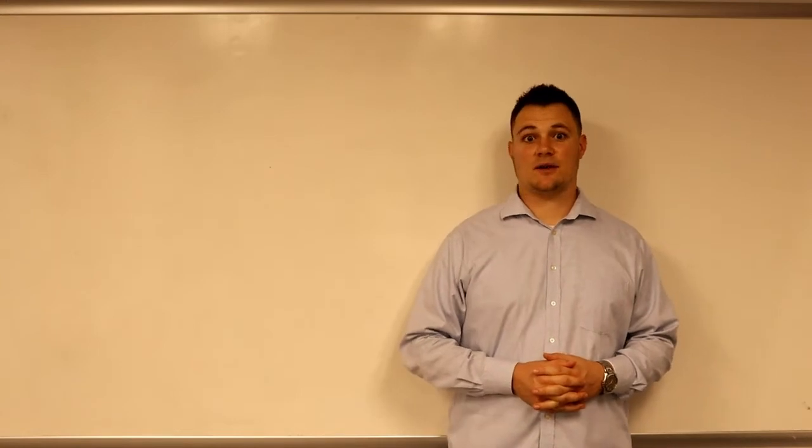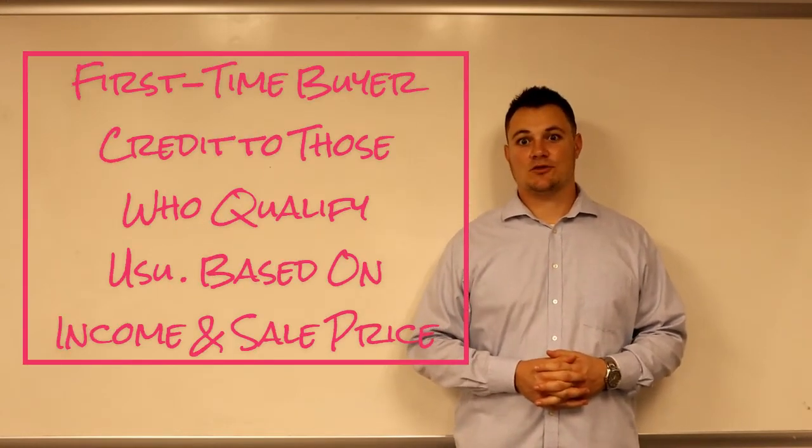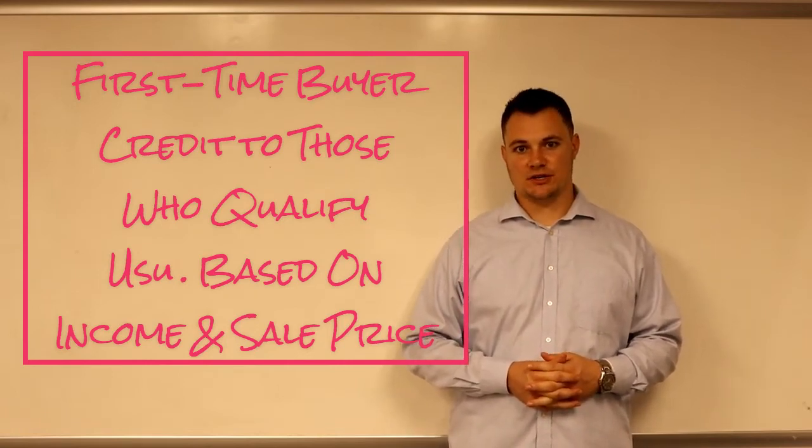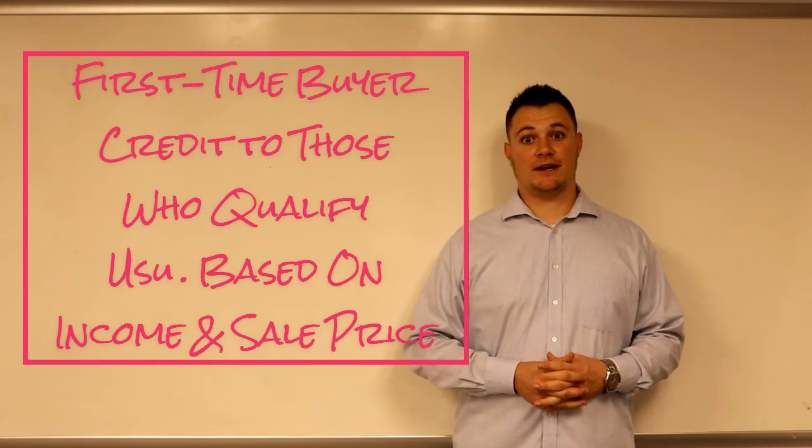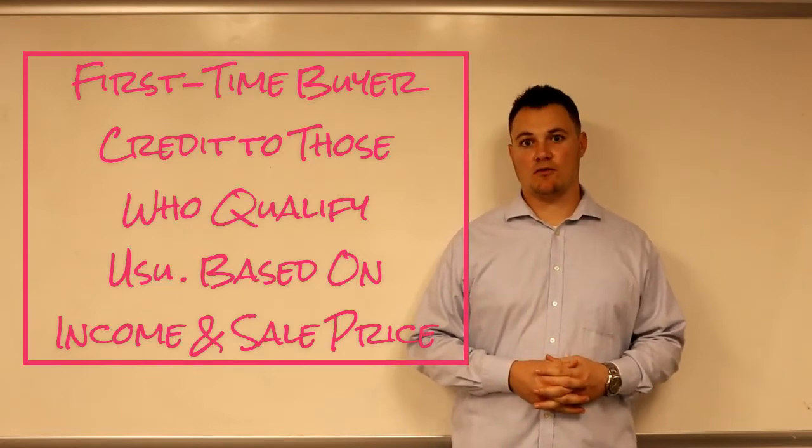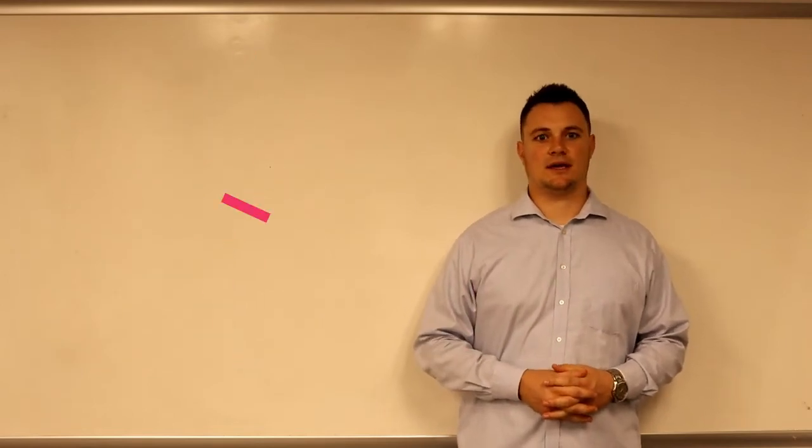And then in some states, first-time buyers, like places in D.C. and Maryland, can get a nice credit if you qualify with the government for their reduction. Now, you'd have to qualify to get that reduction by being within an income limit and not buying a home that's over a certain dollar amount, but a lot of people can get that.